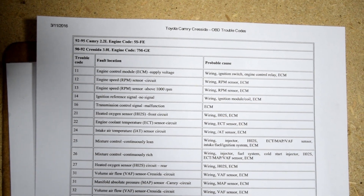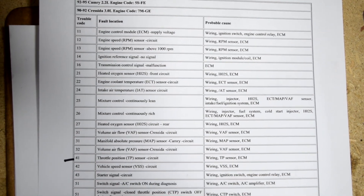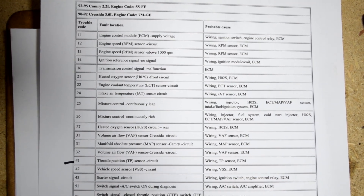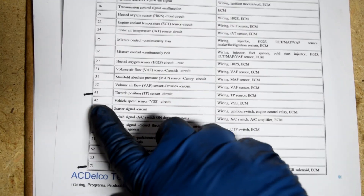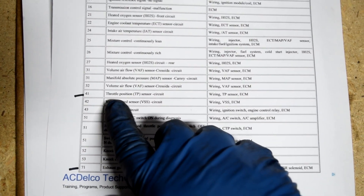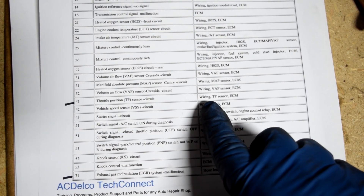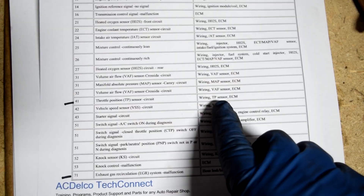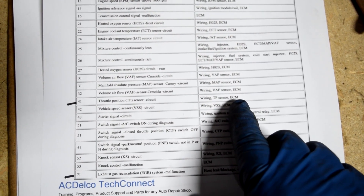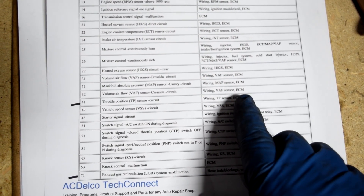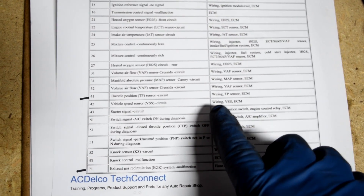Next, all you have to do is look up the codes. Here I've got a list of all the codes for the 92 to 95 Toyota Camrys. Code 41 is for a throttle position sensor — either a fault due to the wiring, the sensor itself, or the electronic control module. This last one is very unlikely; it's usually the sensor or the wiring.